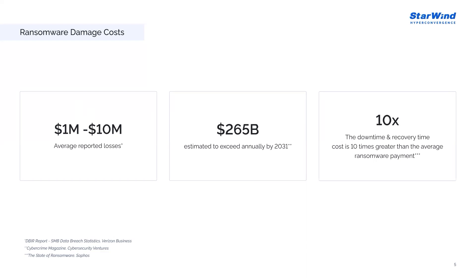Verizon reported nearly 900 incidents of data breaches for small businesses in 2022. Of those attacks, 130 confirmed data loss, with nearly 80 percent being a result of ransomware. These attacks directly affect workflow and employees — almost 40 percent of enterprises had to lay off employees after an attack, 35 percent experienced C-level resignations, and another 33 percent had to temporarily suspend operations. Almost half of the organizations paid ransom to prevent revenue losses, and another 41 percent paid ransom to quicken the recovery process.